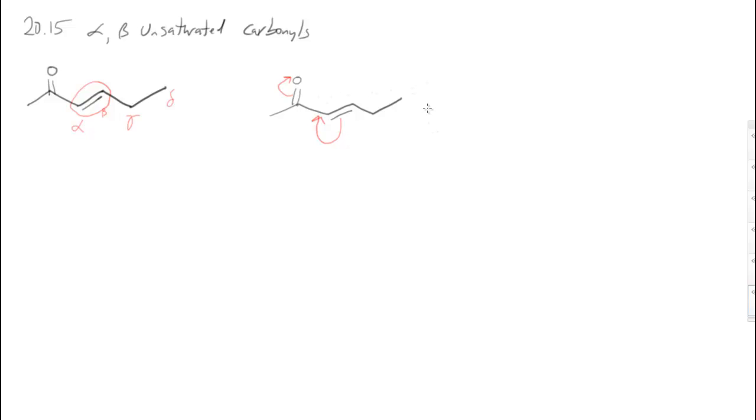That shows charge separation. So that's one resonance structure that we can draw. We can also draw one where we only move the carbonyl carbon pi bond out onto the oxygen. We can leave this one here and we move this electron pair out so that we have a positive at the carbonyl carbon and negative on oxygen. So there are three different resonance structures that we can draw here. One neutral and two with charge separation.